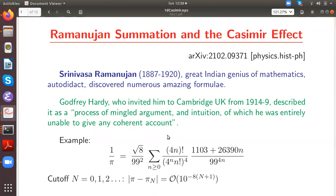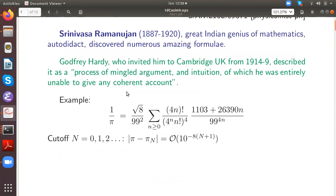Gottfried Hardy, who invited him to Cambridge for five years, describes his discoveries as a process of mingled argument and intuition of which he was entirely unable to give any coherent account. Here is an example, a formula for pi, the number pi, which converges very rapidly, but we have no idea how Ramanujan came up with such formula.